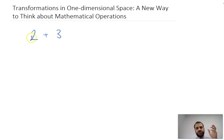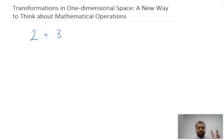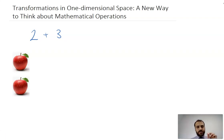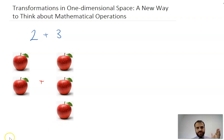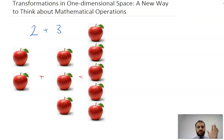Consider the operation two plus three. How might you explain that to a six-year-old? Pause it and think about how you'd explain it. If you're like most people, you might have said something like: I've got two apples and somebody gives me three apples and now I have five apples. And that's a great way to think about it, but we're not going to think about it like that.